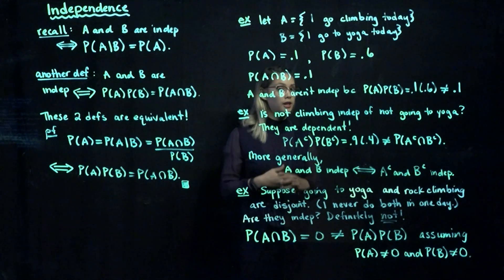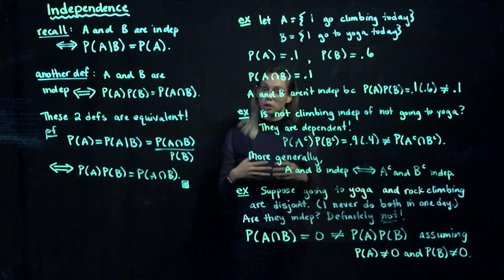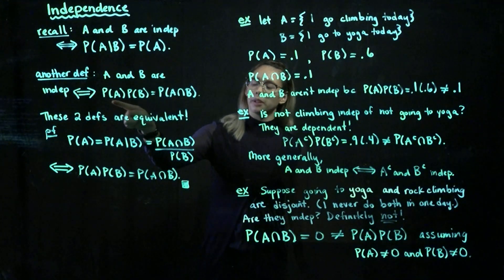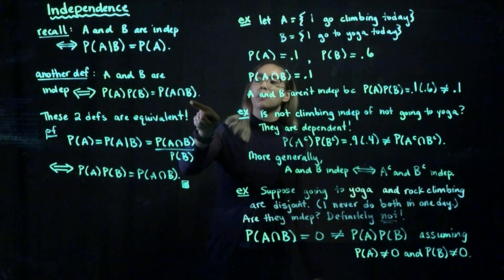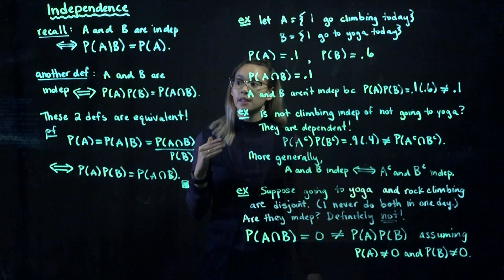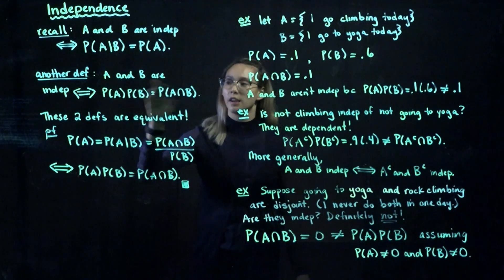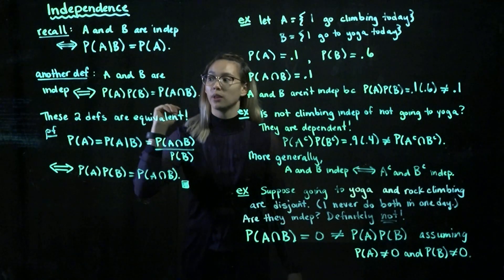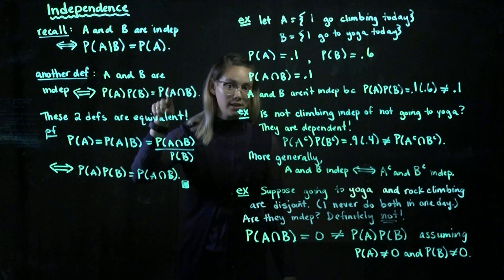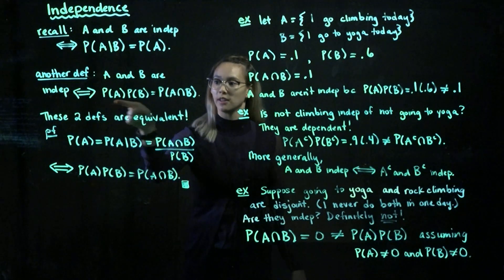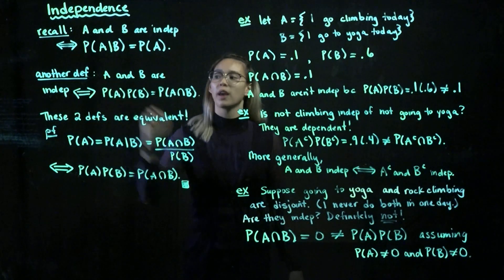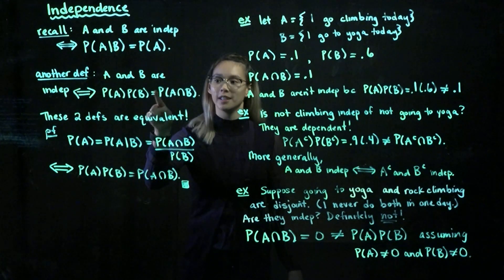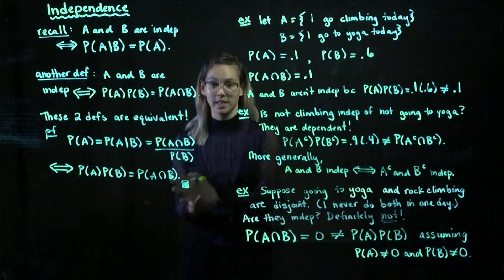Now I'm going to present another definition and actually show you that these two definitions are equivalent. So A and B are independent if and only if the probability of A times the probability of B is equal to the probability of A intersect B. So again, this is a definition — meaning that if I tell you two events are independent, you know this equality holds. And if I tell you that they're dependent, this equality does not hold. And if you check this and the equality holds, you know that A and B are independent. Also, if you check this and the equality does not hold, you know that A and B are dependent.